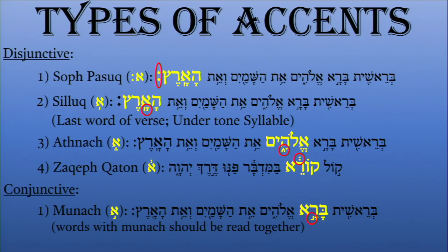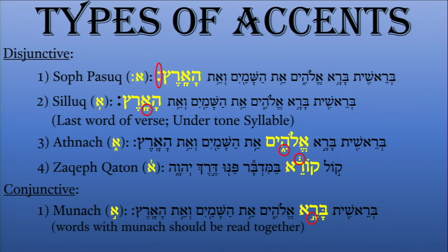There is also one conjunctive accent I'd like to mention: the Munach. You can see it in Genesis 1:1 appearing under the word Bara — it's this reversed-looking L. This is a conjunctive accent, which means you don't separate, you don't pause, you don't divide the two words. So Bara and then Elohim — Bereshit Bara Elohim — God created the heavens and the earth. You make sure that the word Bara is associated with the word Elohim. These accents tell us primarily where to accentuate the word, but also how to divide the verse into various clauses so that we know syntactically where there is a division.